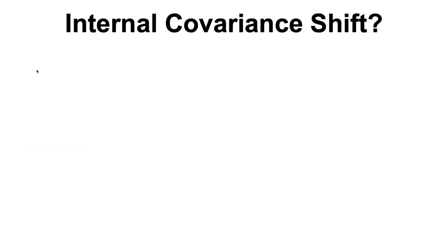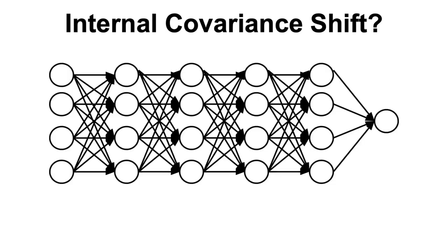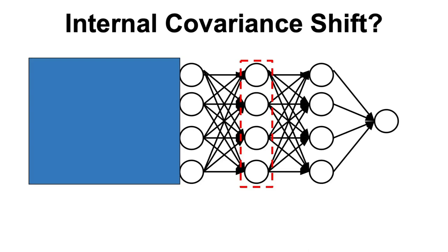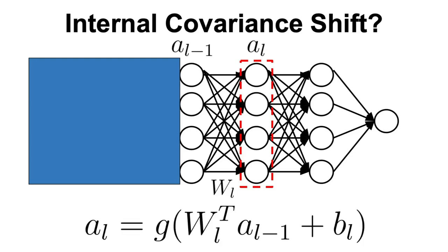So what do we mean by the internal covariance shift and why do we want to reduce it? Well, let's imagine that we have the following neural network and we are one of the deeper layers. From our perspective, all we know about the model is that we can get an input, we multiply it with some weights, add a bias and produce the output. We have no idea that this output was produced by a previous layer and unfortunately, this lack of knowledge has one major side effect.